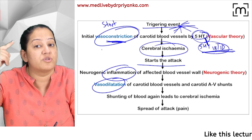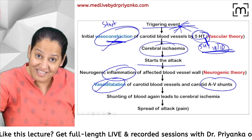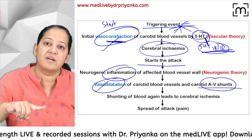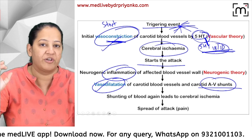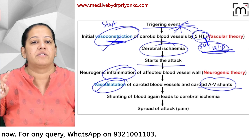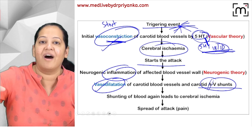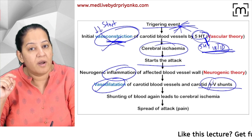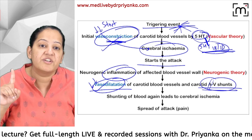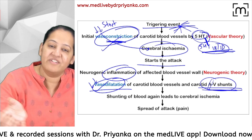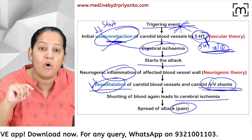Because of the inflammation, vasodilation occurs. Initially vasoconstriction occurred, now vasodilation occurs — of arteries, veins, and shunts — but maximum vasodilation occurs in the shunts. Because of shunt vasodilation, blood moves from artery to vein. In arteries we have high pressure, in veins low pressure, so blood shunts from high to low pressure. This causes further less blood in the artery, exaggerating the ischemia.